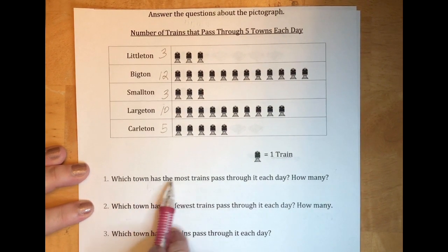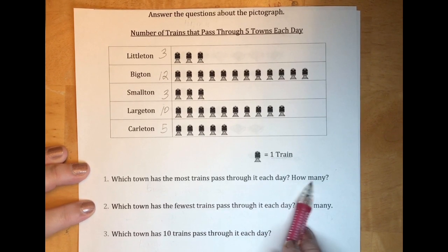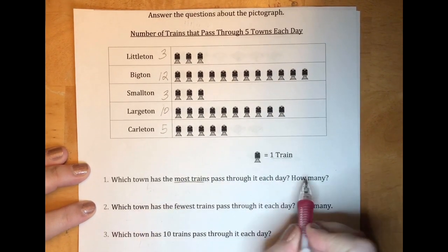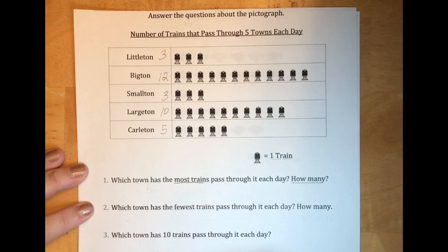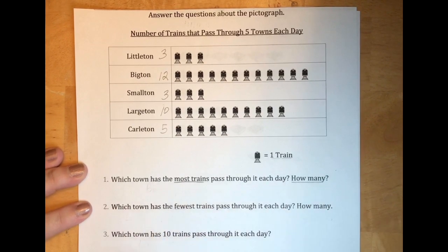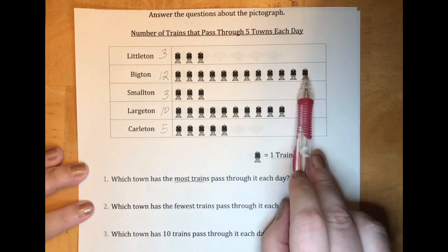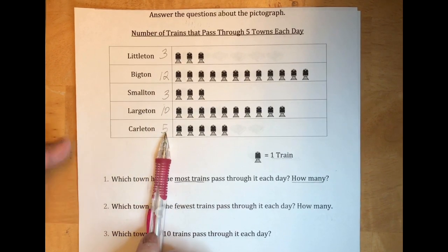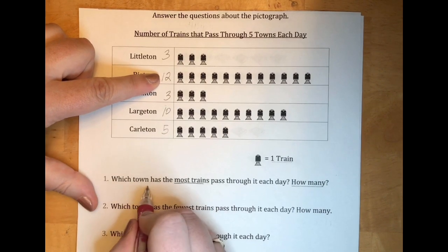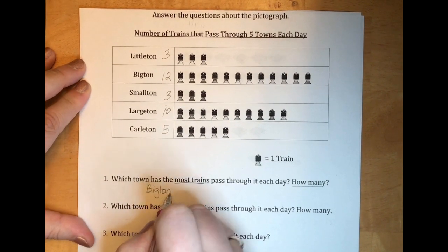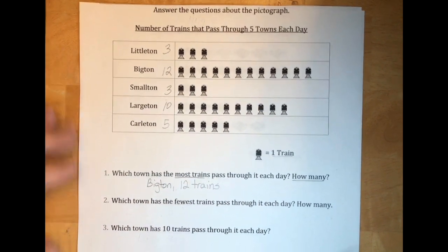Our first question says: which town has the most trains pass through it each day, and how many? We're looking for the most — that's the one with the longest line of pictures, which we can see goes farther than all the others. By our numbers here, we can see that it is Bigton, and they have twelve trains.